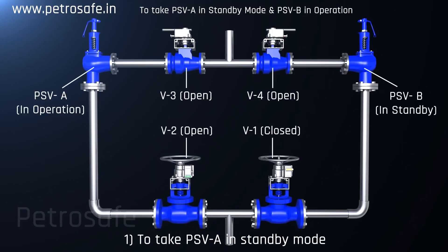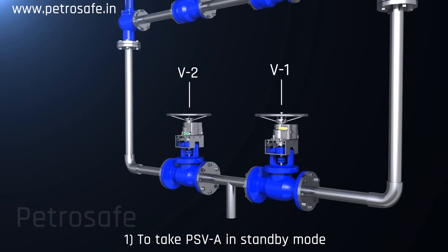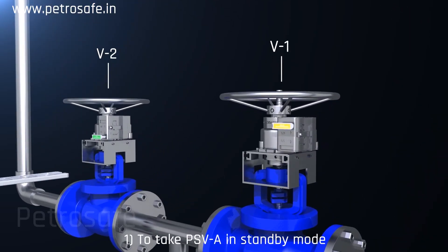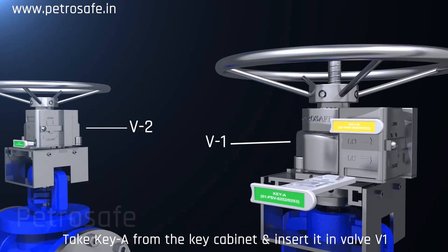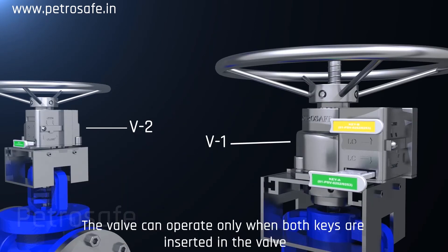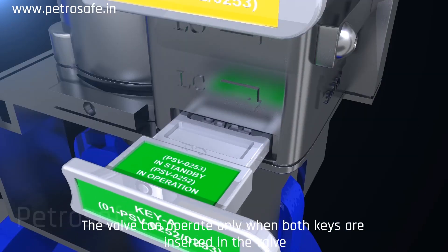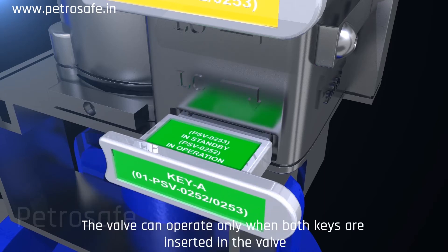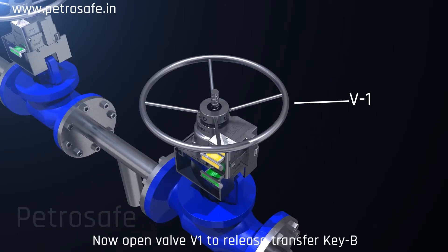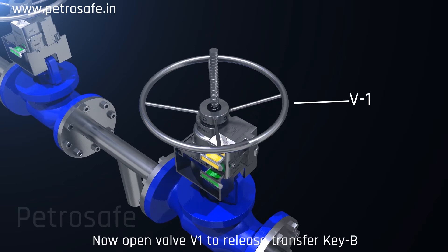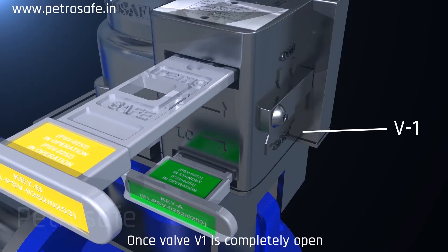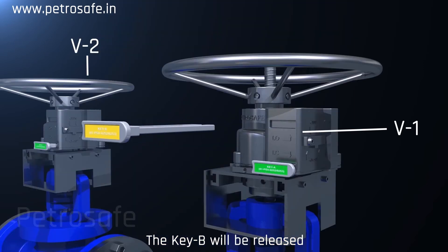Step 1: To take PSV A into standby mode. Take key A from the key cabinet and insert it into valve V1. The valve can operate only when both keys are inserted. Now open valve V1 to release transfer key B. Once valve V1 is completely open, key B will be released.